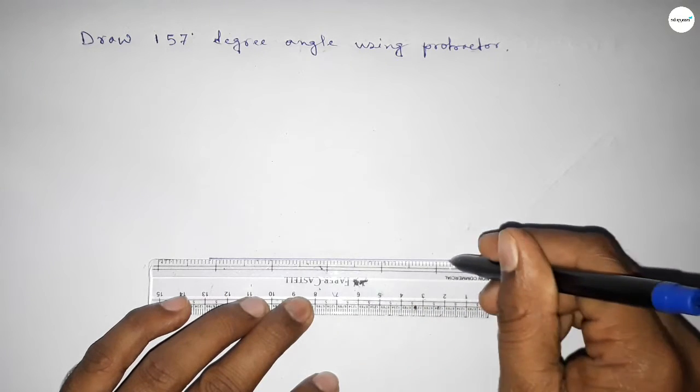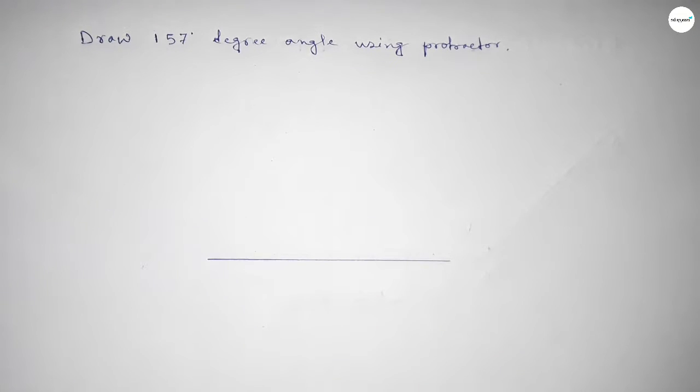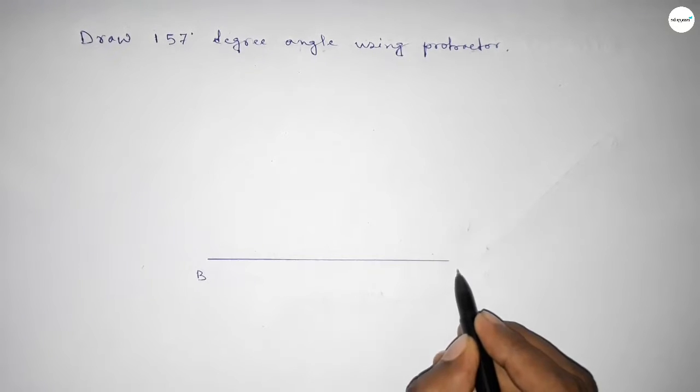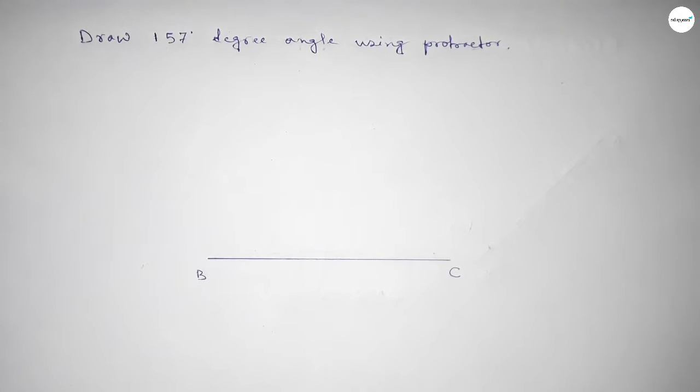First draw a line here. Next, mark point B and point C. Now place the protractor...